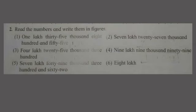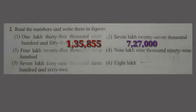Now let's move towards our second question: read the numbers and write them in figures — that is, in numerical format. The first number is one lakh thirty-five thousand eight hundred and fifty-five — see the answer in figures: 1,35,855. The second question is seven lakh twenty-seven thousand — here the hundreds, tens, and units positions all have zero, so we write 7,27,000.